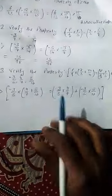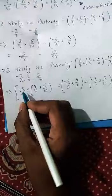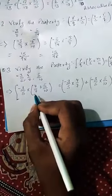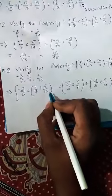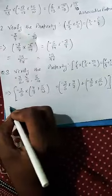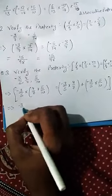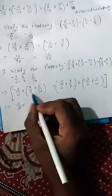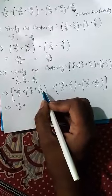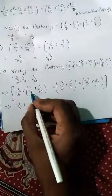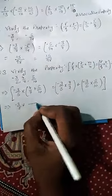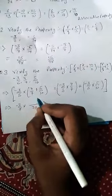First we will solve our left side. On the left side we have minus 3 by 5 multiply 4 by 7 plus 5 by 10. First we will solve the bracket. Minus 3 by 5 we write as it is, multiply. When we have addition and both numbers are unlike, we need to take the LCM. What is the LCM of 7 and 10? 70.